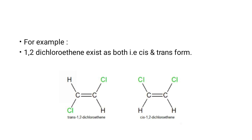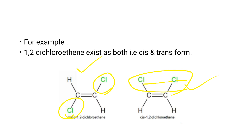An example of cis-trans nomenclature is 1,2-dichloroethene, which exists in both cis and trans forms. In cis-1,2-dichloroethene, the two chlorine groups are attached on the same side of the double bond. In trans-1,2-dichloroethene, the two chlorine groups are attached on opposite sides.